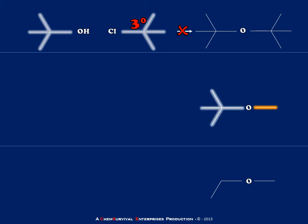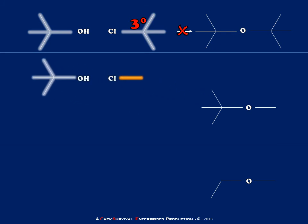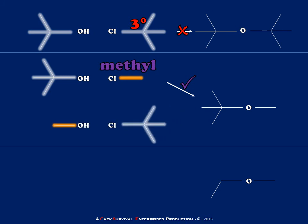As another example, let's take t-butyl methyl ether, the molecule we worked on earlier. There are two potential sets of reagents to consider. One is t-butanol and methyl chloride — we expect that methyl substrate to react very well by SN2 and give us the desired product. The other set would be methanol and t-butyl chloride. However, this again uses a tertiary substrate, so even though it may appear equally viable, it's not — it will create much more of the elimination product.